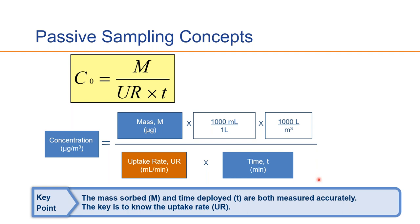Under kinetic conditions, air concentration is calculated with a simple equation: concentration equals the mass on the sampler divided by the uptake rate multiplied by the deployment time. The laboratory measures mass on the sorbent bed in nanograms or micrograms, prepared by either solvent extraction or thermal desorption and analyzed by GC-MS. Using the uptake rate in mL per minute and the deployment time in minutes yields units of mass per volume, which can be converted to micrograms per cubic meter. Mass and time are measured very accurately; the key to a successful calculation is the uptake rate.